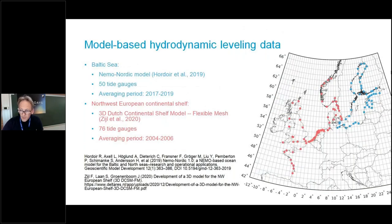Here are some zoomed-in details of the models that we used. For the Baltic Sea, we have access to the NEMO Nordic model. We had 50 tide gauges, and the simulation period was 2007 to 2019. For the Northwest European continental shelf, we made use of the DCSM-FM model, which is developed by Deltares. We had 76 tide gauges, and the averaging period is different. I want to stress that we don't allow for connections between the Baltic and the Northwest European continental shelf.